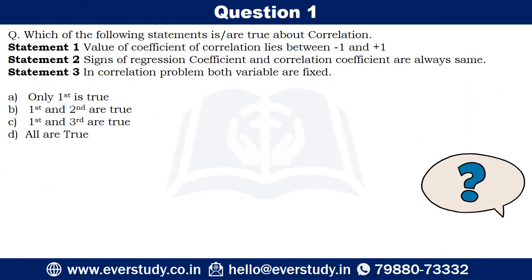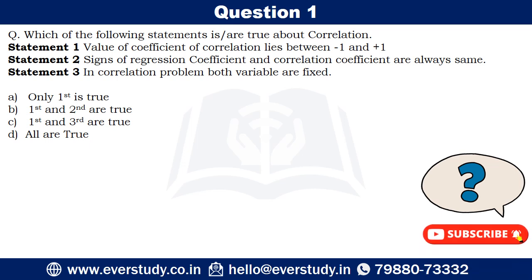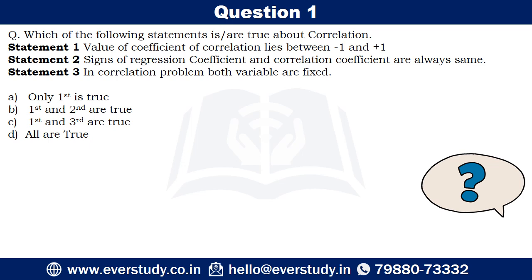Before going into the Q&A round, I would like to give a gist of what correlation is. Correlation is a relationship between two variables — it tells us how much the variables are correlated, to what extent they are correlated with each other.